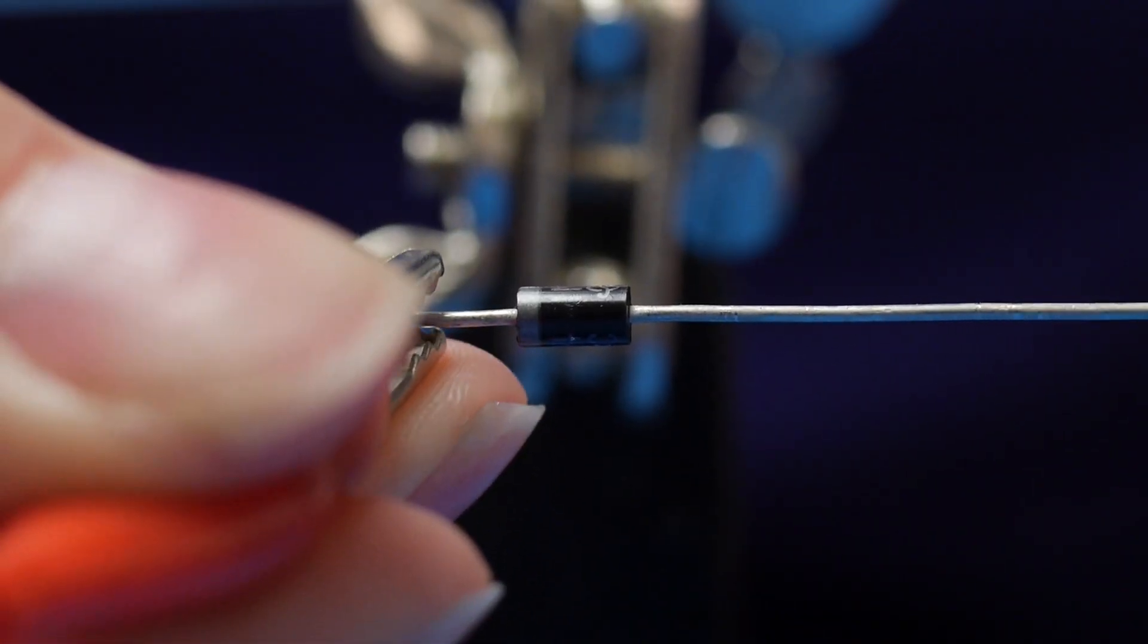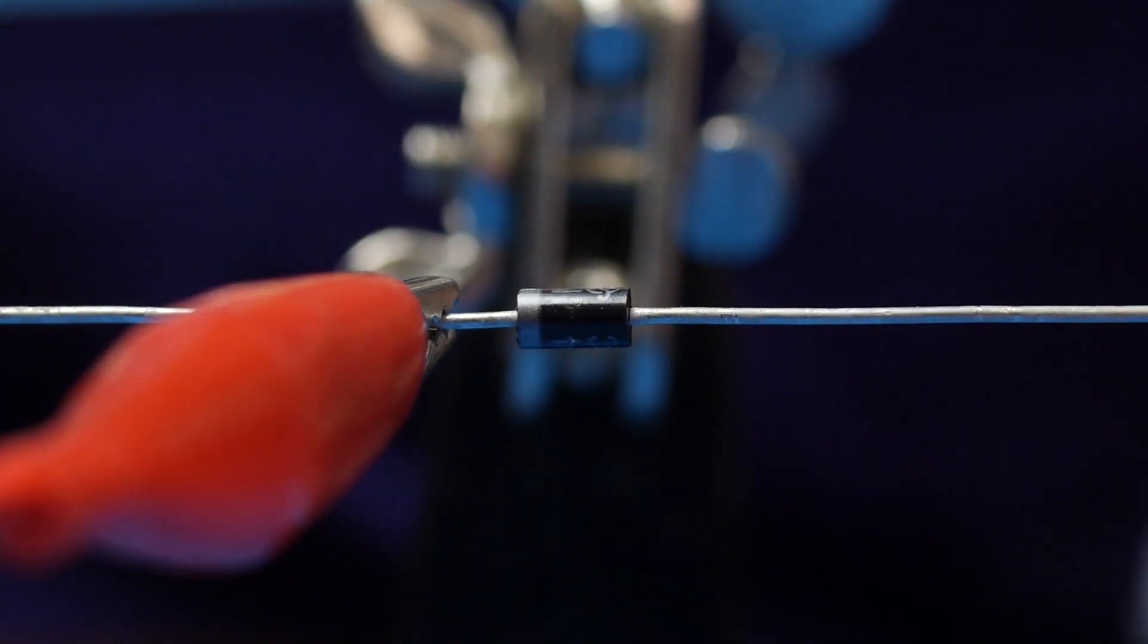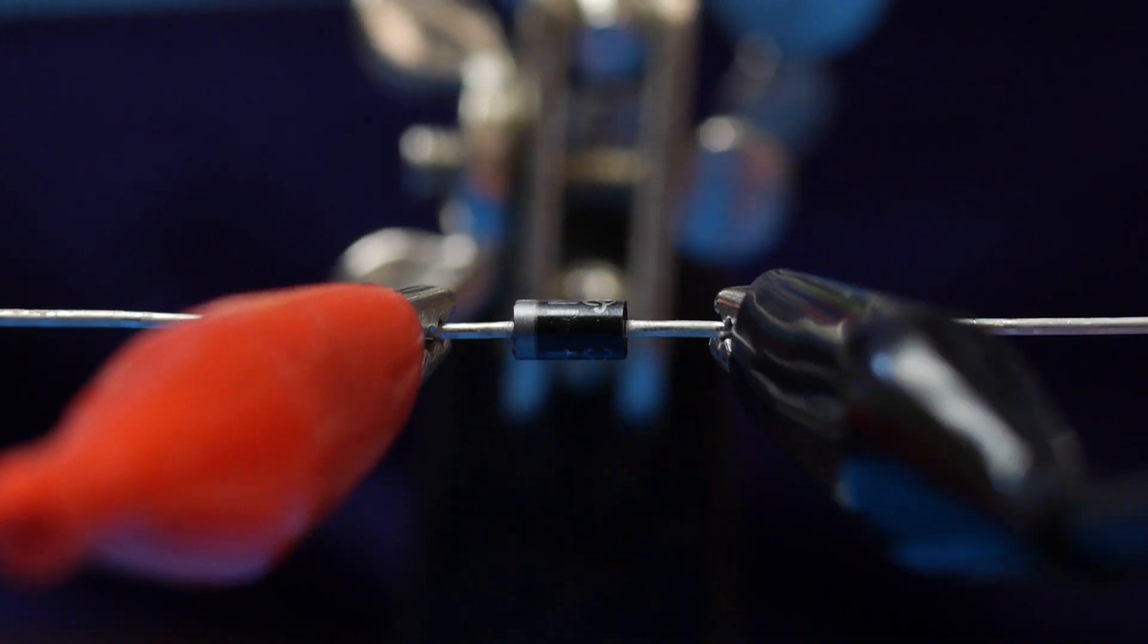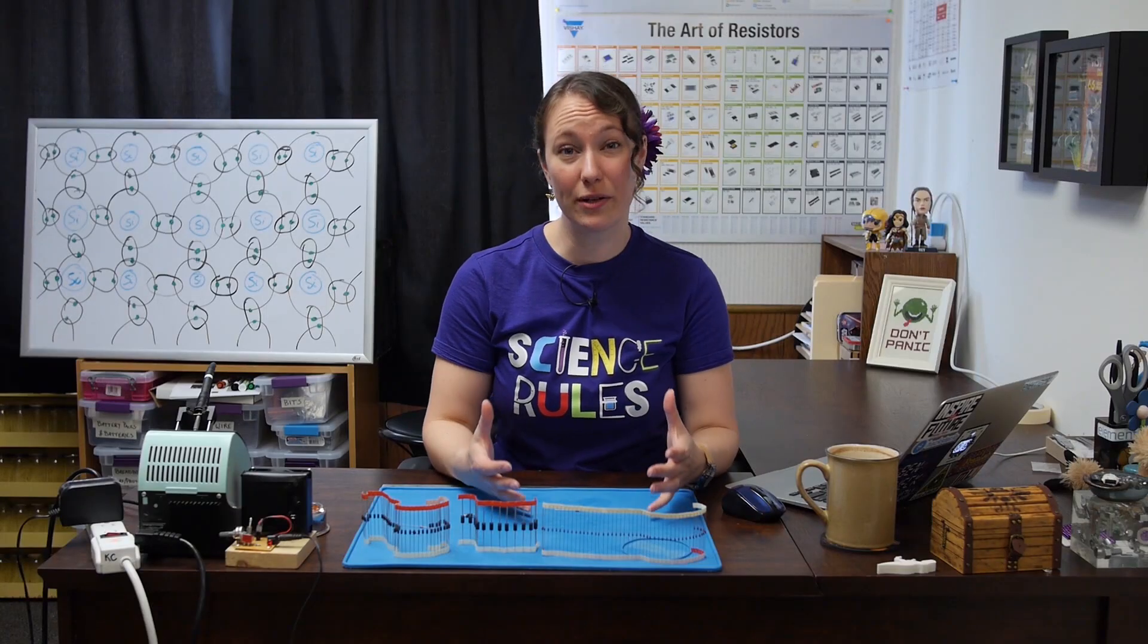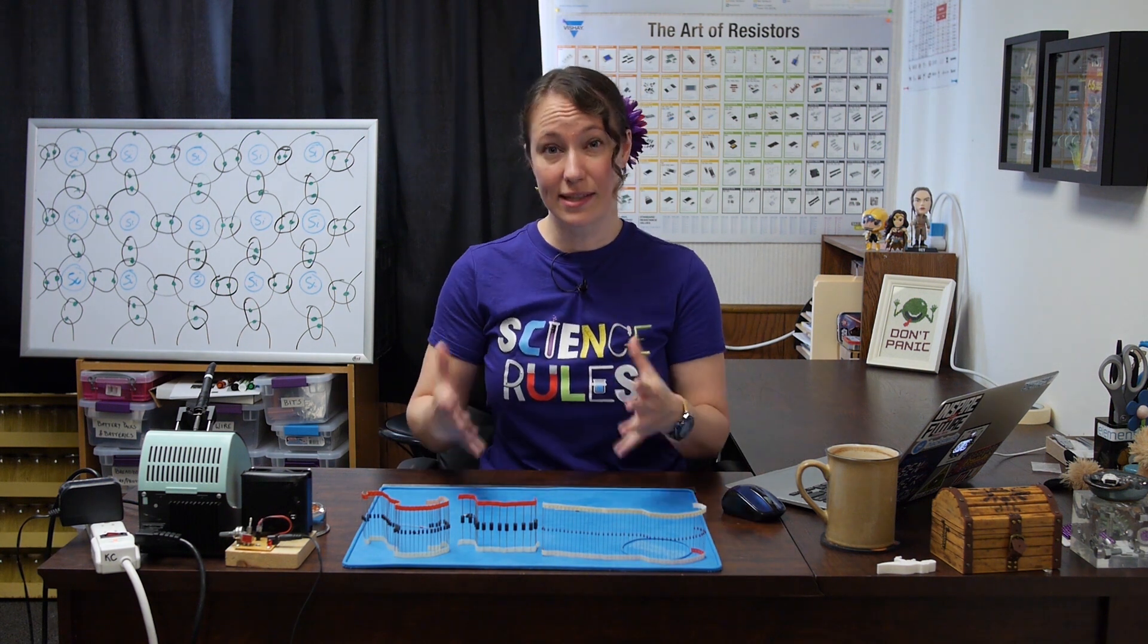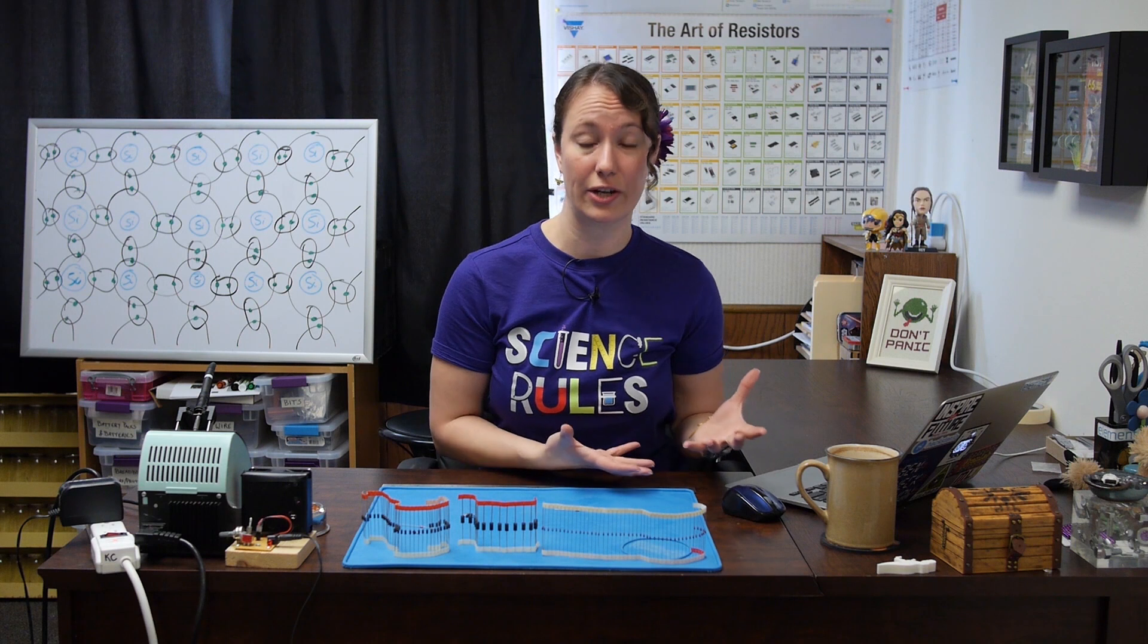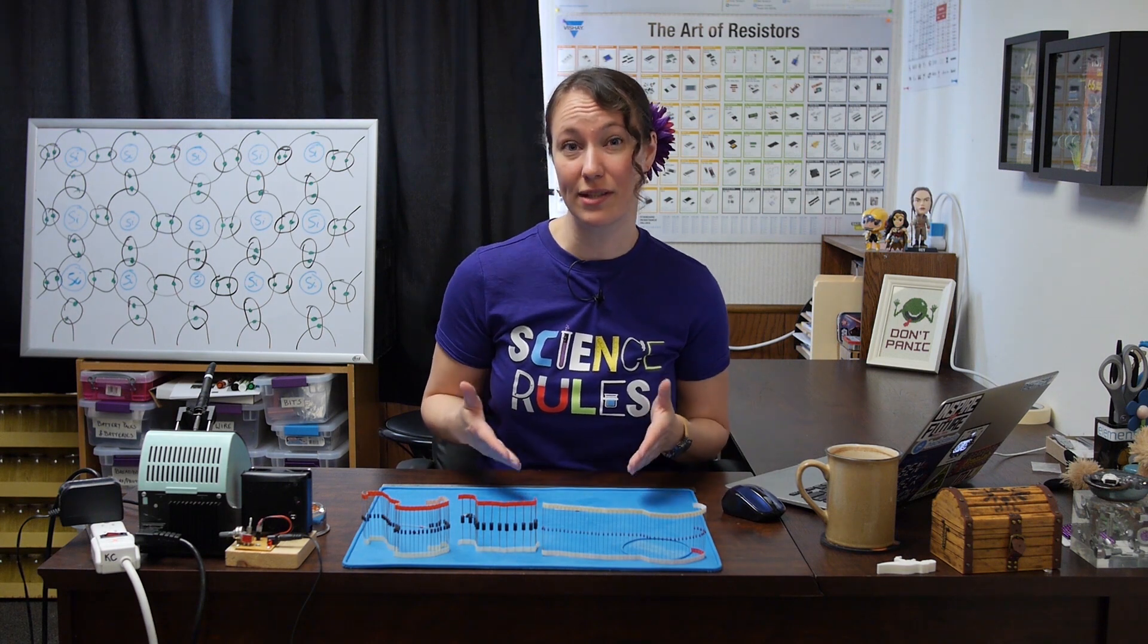Let's let the diode do its job and hook it up backwards, with the negative terminal connected to the anode and the positive terminal connected to the cathode. Since a diode is meant to only allow current to flow through it in one direction, it should stop electricity flowing through it in this direction. Let's take a look inside the diode to see what's happening.